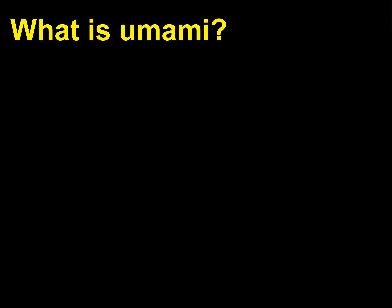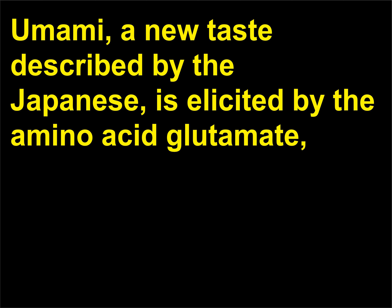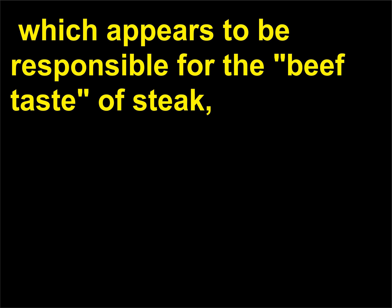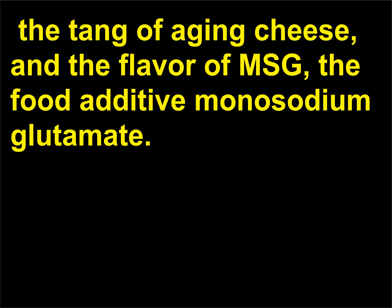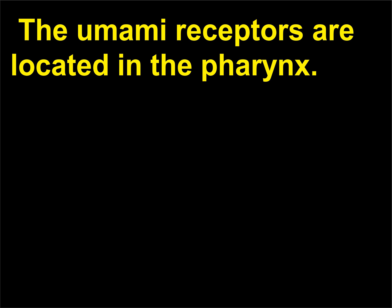What is umami? Umami, a taste described by the Japanese, is elicited by the amino acid glutamate, which appears to be responsible for the beef taste of steak, the tang of aging cheese, and the flavor of MSG — the food additive monosodium glutamate. The umami receptors are located in the pharynx.